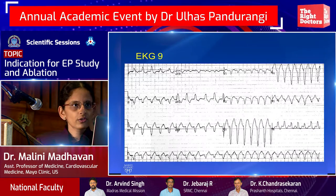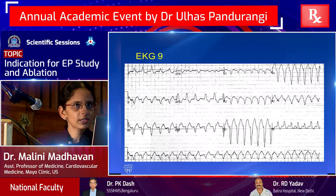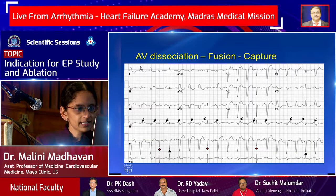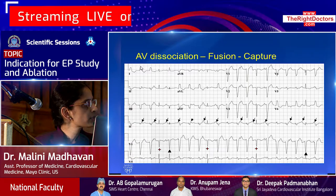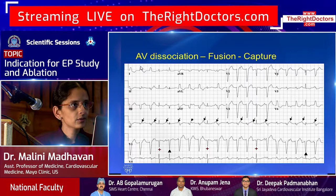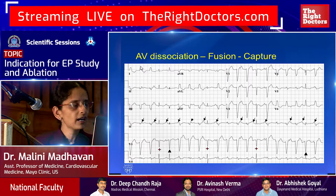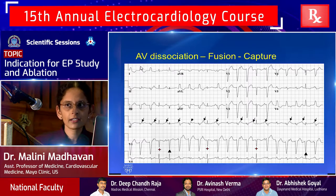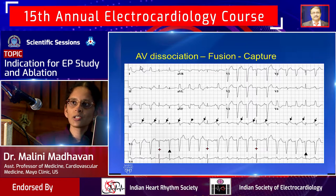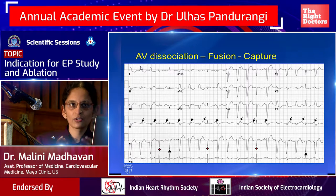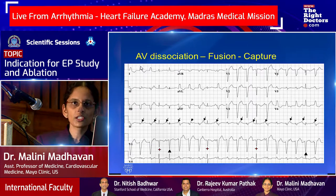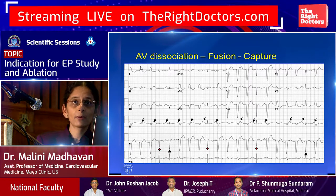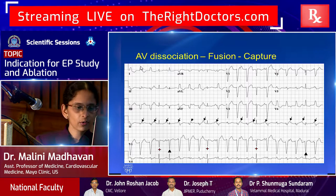A similar wide complex tachycardia in another patient: sometimes additional ECG information confirms the diagnosis. If you see wide complex beats with narrow complex capture beats in between — sinus rhythm intermittently conducting to the ventricle — this is diagnostic of ventricular tachycardia. In this situation, you don't need EP study just for diagnosis, but EP lab referral for VT ablation is helpful if patients don't respond to antiarrhythmic drugs.